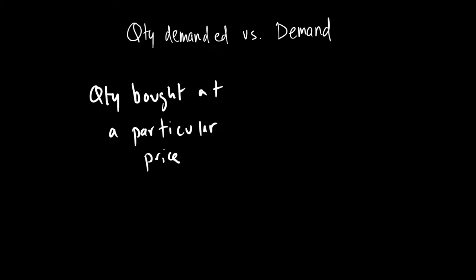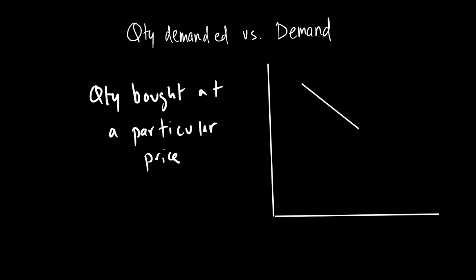I want to show you this with the help of a demand curve. When we look at our demand curve, which is downward sloping, if the price is P0, then the quantity demanded will be Q0. We can't say demand will be Q0, because we are looking at quantity bought at a particular price — so quantity demanded will be Q0.